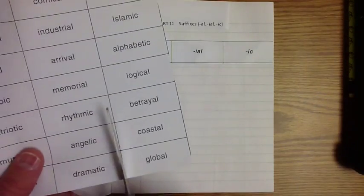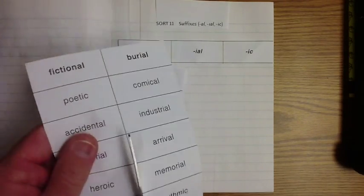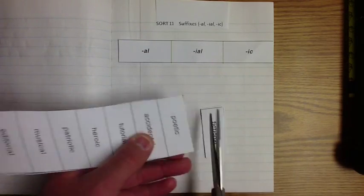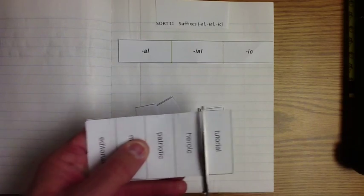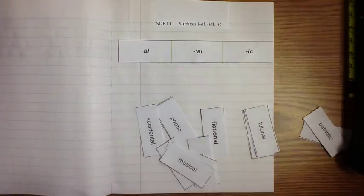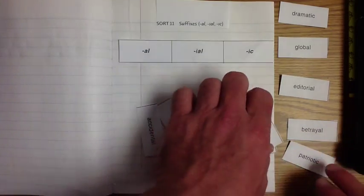It looks like this week we're doing sort 11 and we're doing some suffixes. So what is a suffix? We've got the -al, the -ial, the -ic. There's a dash in front of all of those letters, and that means they are suffixes. They come at the end of the word when we do our suffixes.